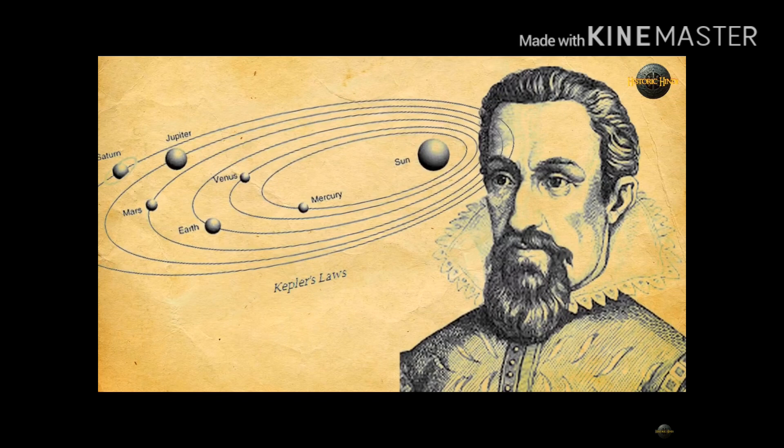Actually, Tycho Brahe was trying to prove that Copernican theory was wrong and he was basically targeted towards the geocentric theory. That is, Earth is the center of the solar system and all planets were revolving around Earth.